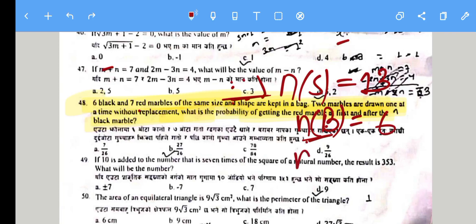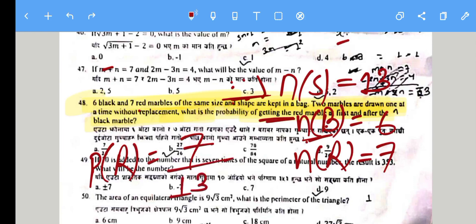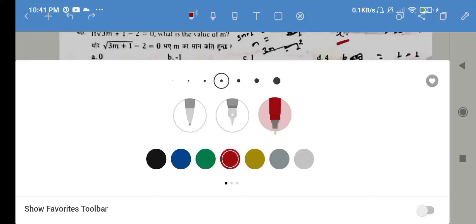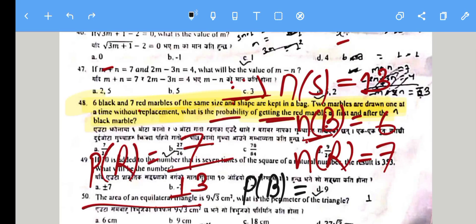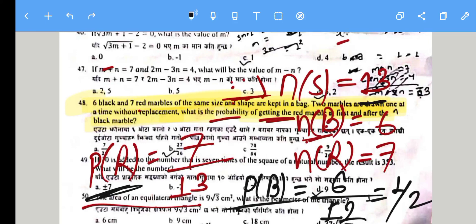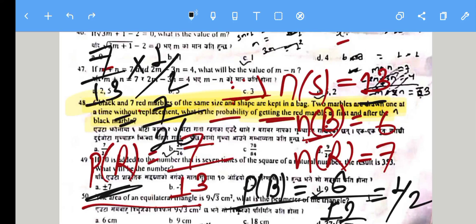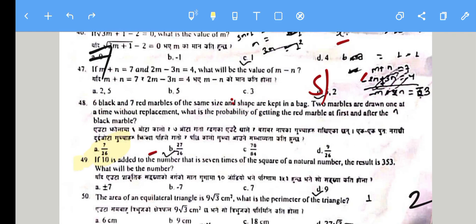Total marbles = 6 + 7 = 13. Probability of red first = 7/13. Without replacement, probability of black second = 6/12 = 1/2. The combined probability is 7/13 × 1/2 = 7/26. So 7/26 is the correct answer.